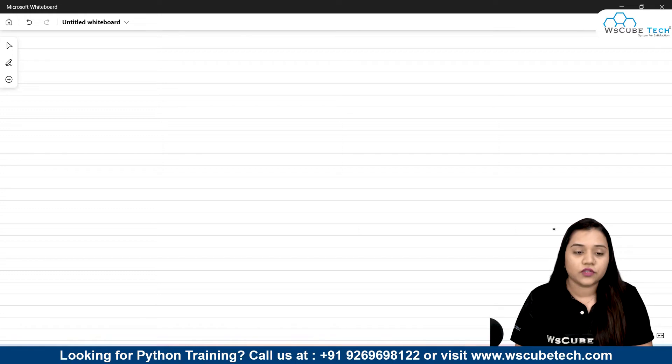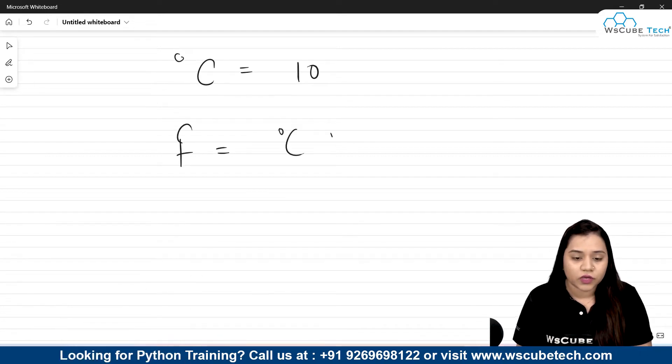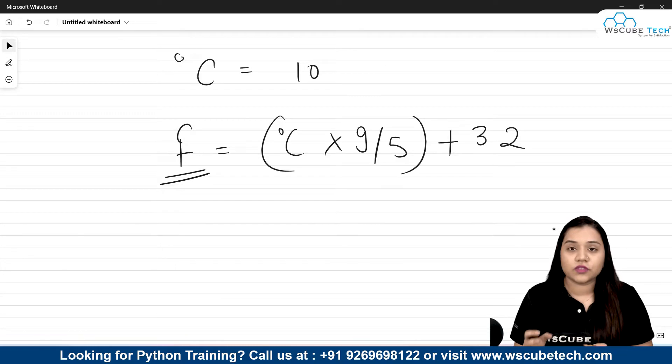So here in this program all we need to do is take an input from the user as a variable for degree Celsius. That degree Celsius, let's say it's 10. To convert it into Fahrenheit all we need to do is multiply this degree Celsius with 9 by 5 and the whole will be then added to 32. This is the same formula that we will be using to write our Python program.